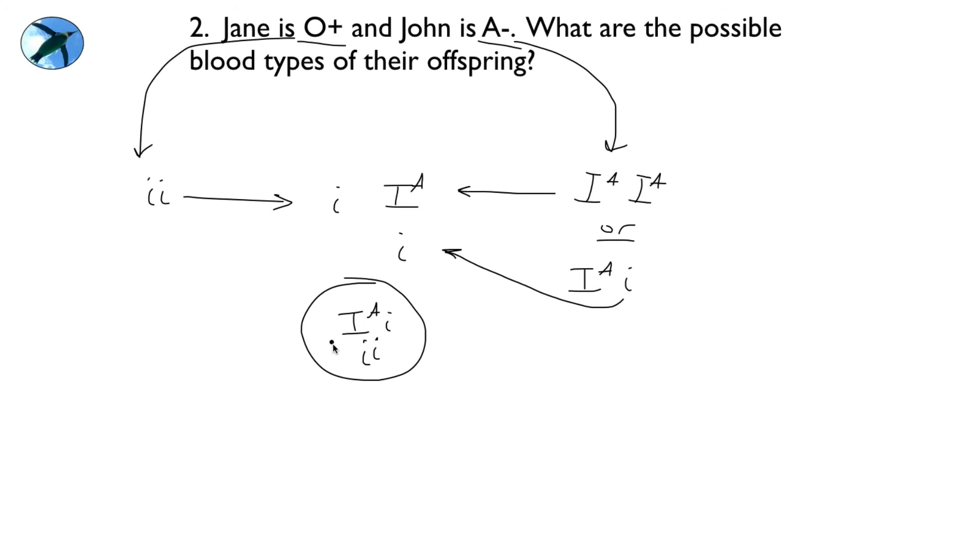So what you do is you look between the two parents and you see what combinations are possible. So all the options will be either A or O.